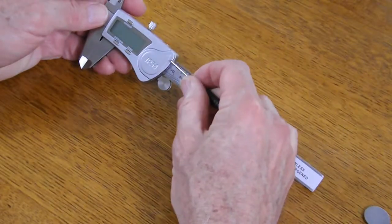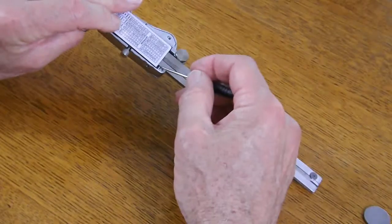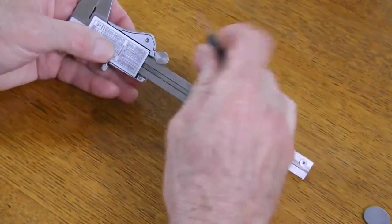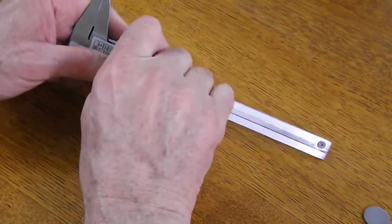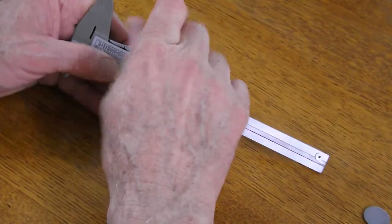The screw that holds the battery cover on is right here. Sometimes people make a mistake and they take out this screw, which I've done myself.